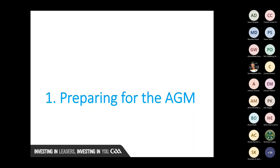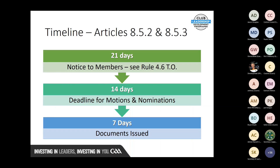Moving on to preparing for the AGM. The timelines are very important and are seen in Articles 8.5.2 and 8.5.3. There is a significant change: up to Congress 2021, you had to notify members 28 days before the AGM, with 21 days for motions and nominations, and 14 days for issuing documents back out. That has now been brought forward to 21 days, 14 days, and 7 days, because methods of communication are much faster now.